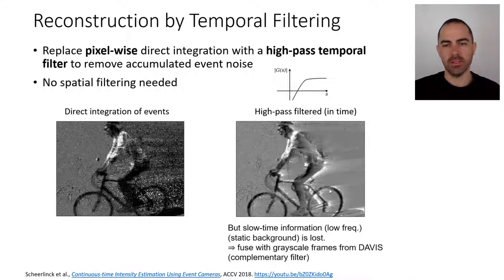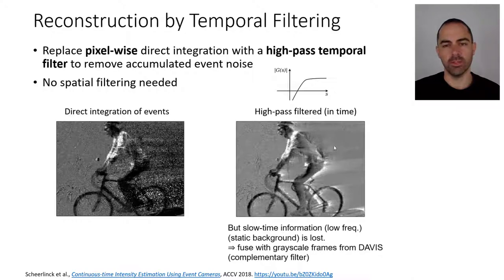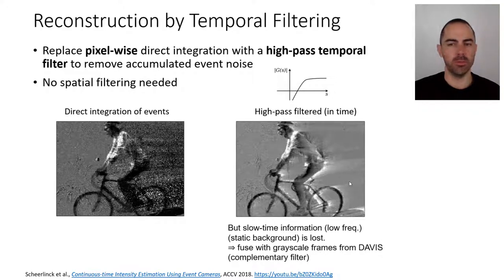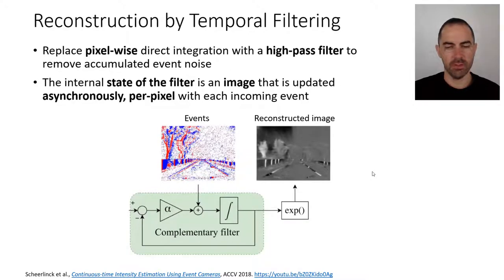The problem with a high-pass filter is that if the x-axis is temporal frequency, we allow high-speed changes to pass but not slow time information — the low frequencies. That means we are not able to reconstruct the static background, which is obvious. So they propose a strategy to fuse this kind of reconstruction — to fuse the events with the frames from the DAVIS to get the best of both worlds: slow time information from regular grayscale frames and high temporal information from the events.